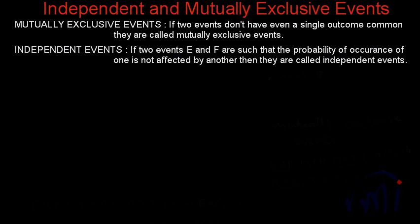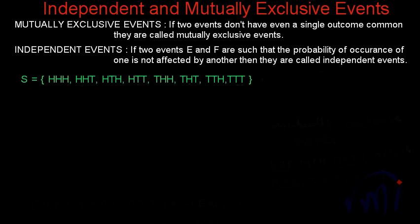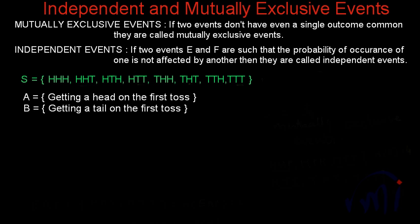We are going to understand these definitions by taking one example. So suppose if we toss a coin three times, then there are going to be a total of eight outcomes. And if we define two events A and B, where A is getting a head on the first toss and B is getting a tail on the first toss, and now if we write down the favorable outcomes of event A and event B —